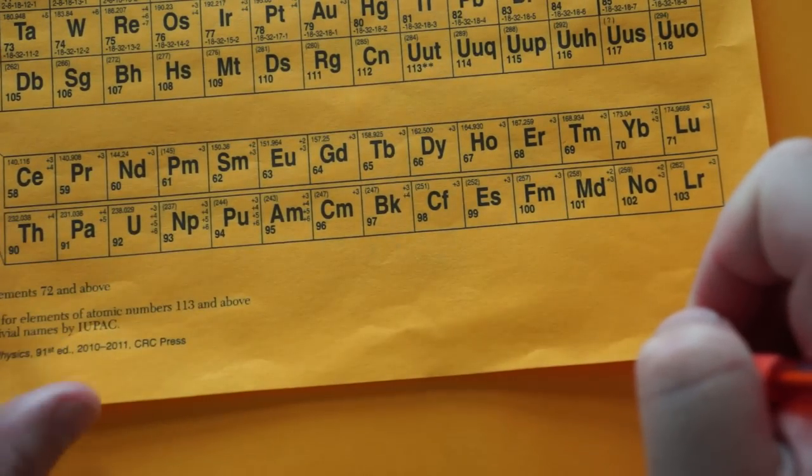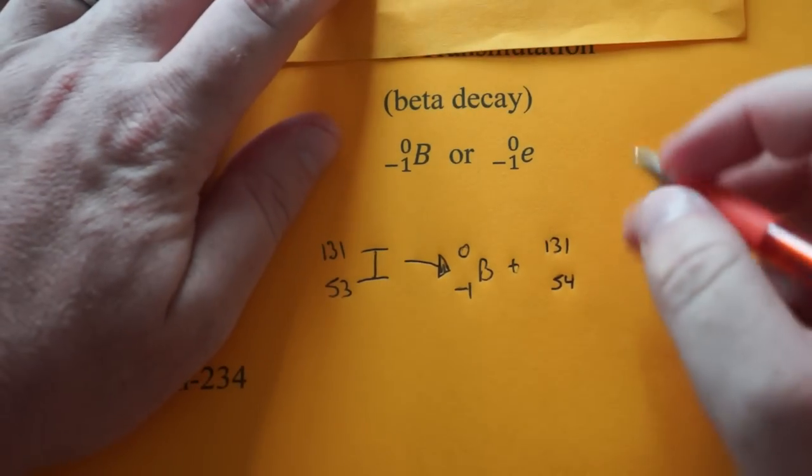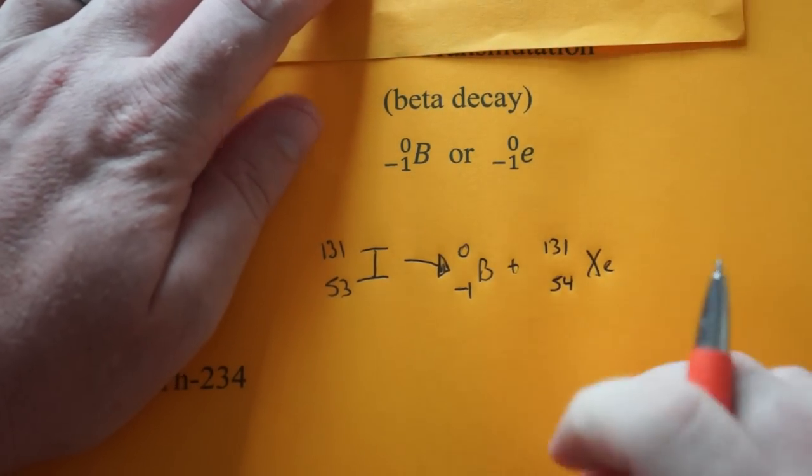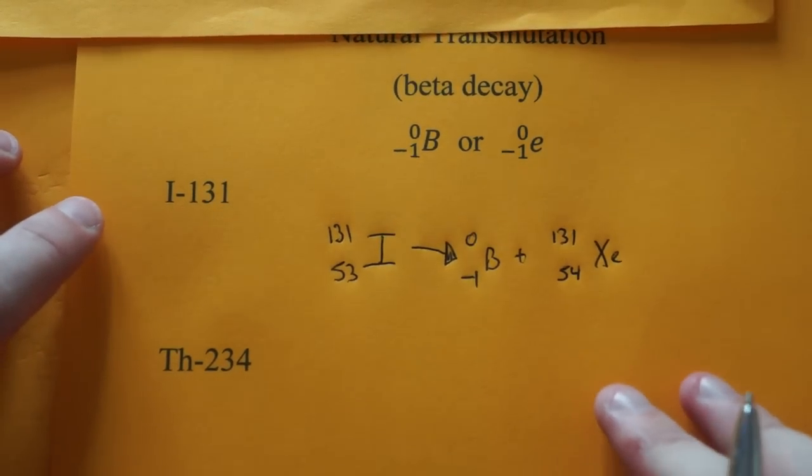So we go back to the periodic table. We look up element number 54. It's xenon. And we're done with that natural transmutation.